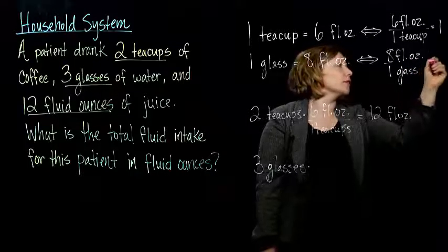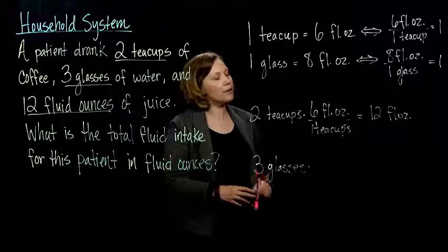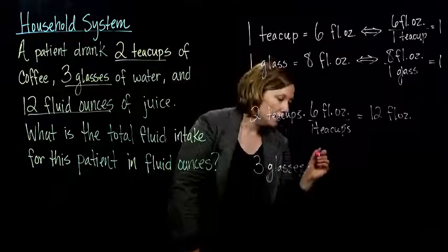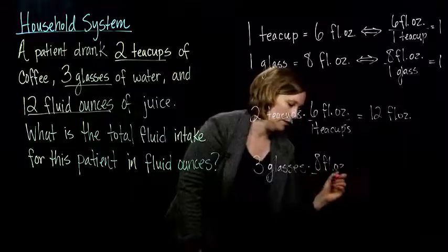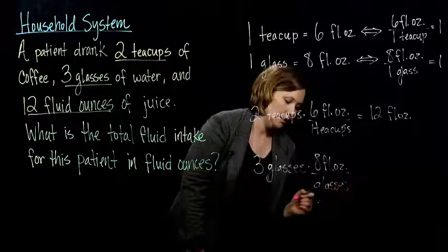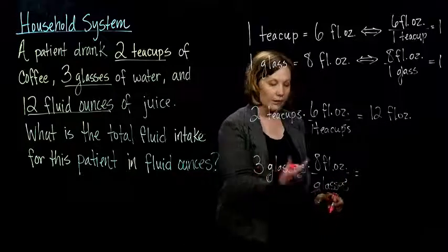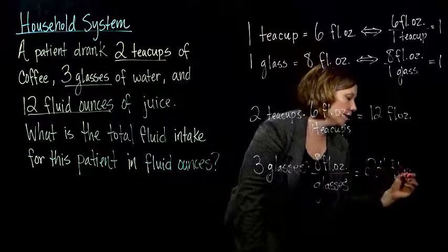So, that guy is equivalent to one so I can multiply by that. Eight fluid ounces over glasses. My glasses are going to cancel. Three times eight gives me 24 and I'm left with fluid ounces.